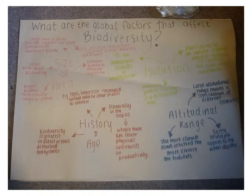The second factor is history and age. In general, biodiversity is greatest in the oldest and least disturbed ecosystems, especially in the tropics where there are few physical constraints on productivity. Third, isolation. Geographical isolation, particularly on remote islands, reduces the number of species but also encourages endemism, as the remaining species develop in a distinctive way — for example, in the Galapagos Islands or in Madagascar. And finally, altitudinal range. A large altitudinal range means a cross-section of different climates; the more climatic zones involved, the more diverse the habitat. The same principle applies concerning ocean depth.